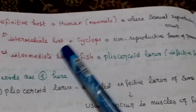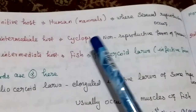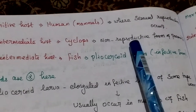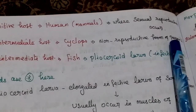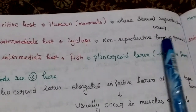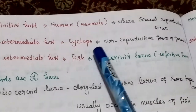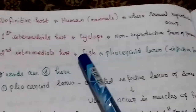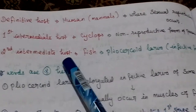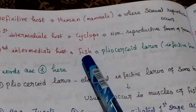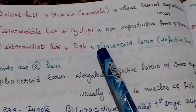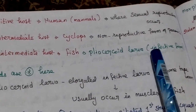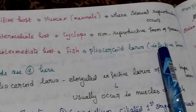The first intermediate host is Cyclops. Here no reproduction occurs — only a non-reproductive form of the parasite, because the Cyclops intestine is small. The second intermediate host is fish, which carries the plerocercoid larvae — the infective form that causes infection in human beings.